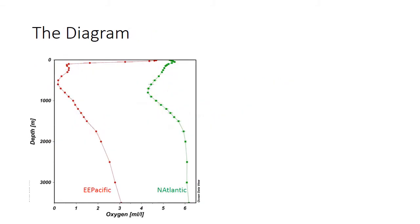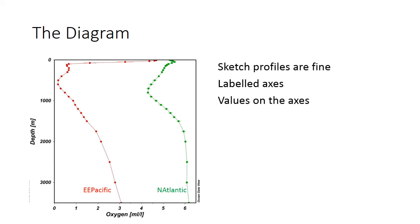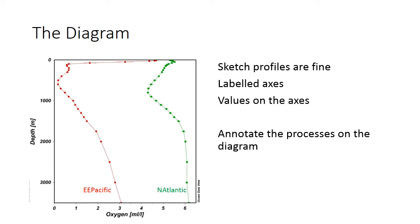Here's a diagram you might want to draw for this type of question — these are two real profiles, one from the eastern equatorial Pacific, one from the North Atlantic. I wouldn't have expected you to accurately know exactly what these profiles look like, but a sketch with the correct broad shape and correct relative concentrations between the two profiles is what we want. Your sketch should have labelled axes — depth and oxygen concentration. If you can remember the actual oxygen concentrations, even better. Annotating the diagram is a very efficient way of writing your answer — for example, a label with an arrow saying 'respiration causing an oxygen minimum zone' saves you writing a whole paragraph about it.